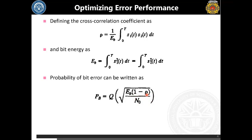If rho equals one, meaning the signals are fully correlated, the argument of the Q function becomes zero. Since the argument of the Q function and the probability of bit error are inversely proportional, an argument of zero gives the maximum value of 0.5, which is the worst possible BER. On the other side, if rho equals minus one, the expression becomes Q of sqrt(2Eb / N0), which gives a reduced bit error rate.